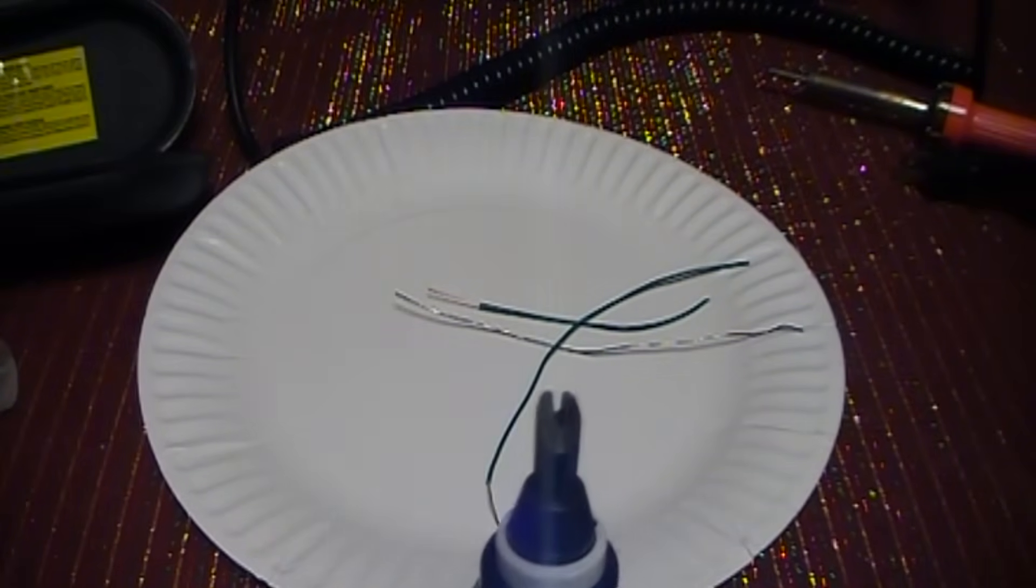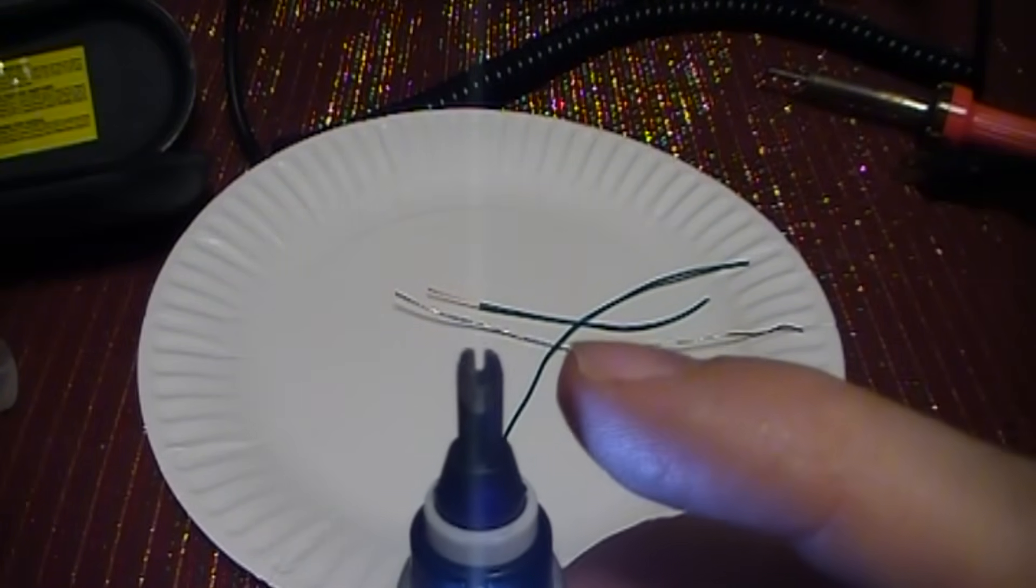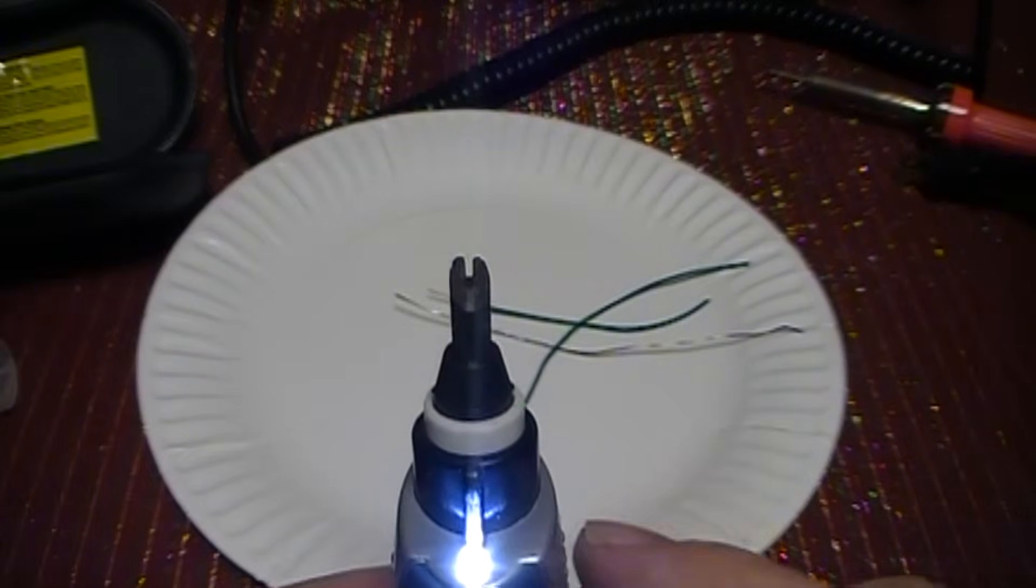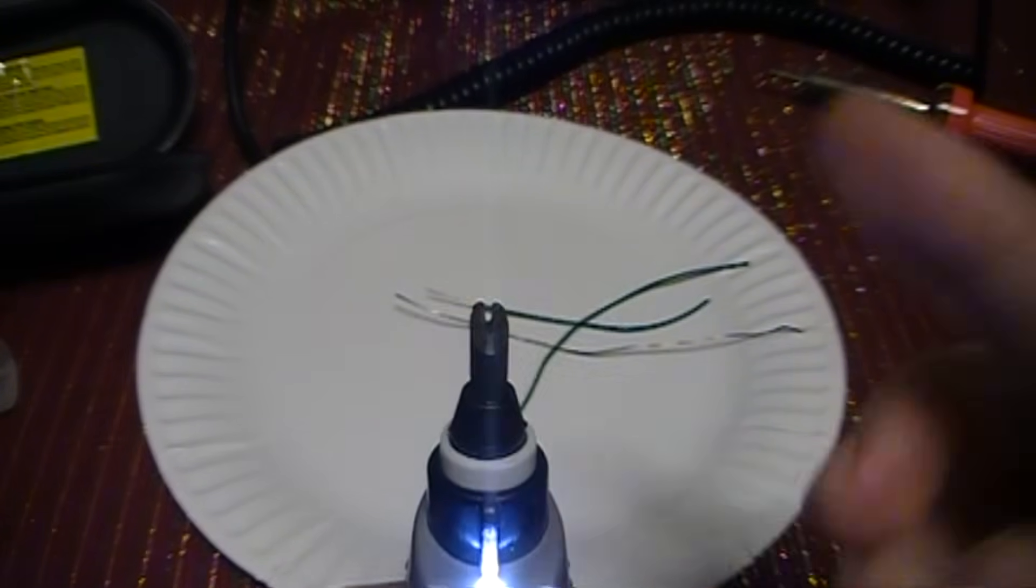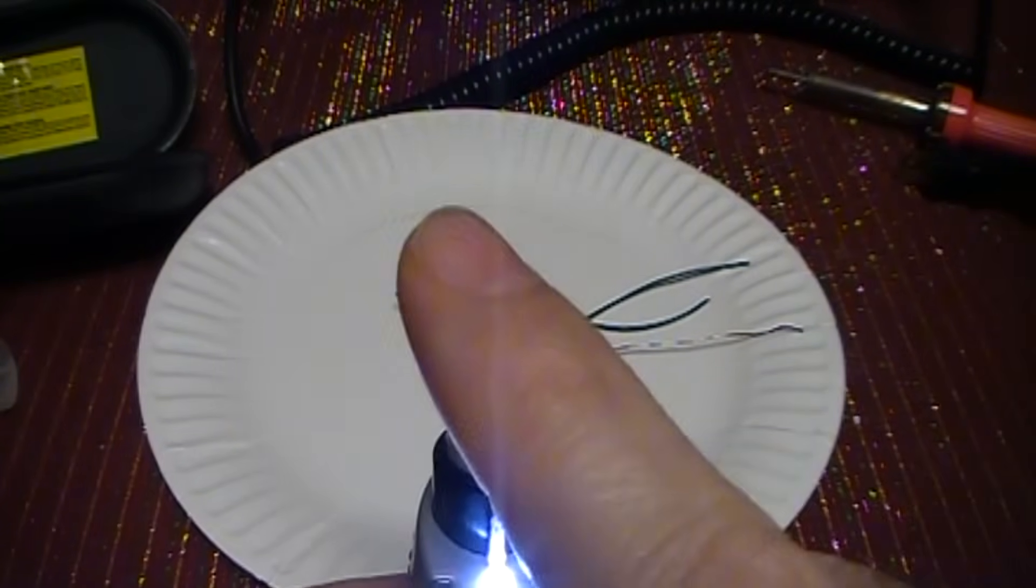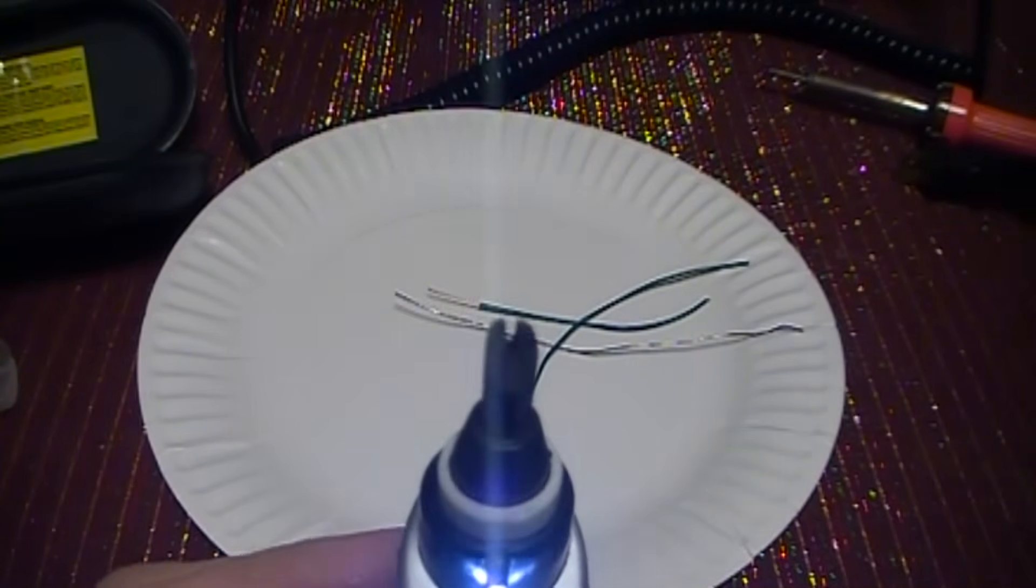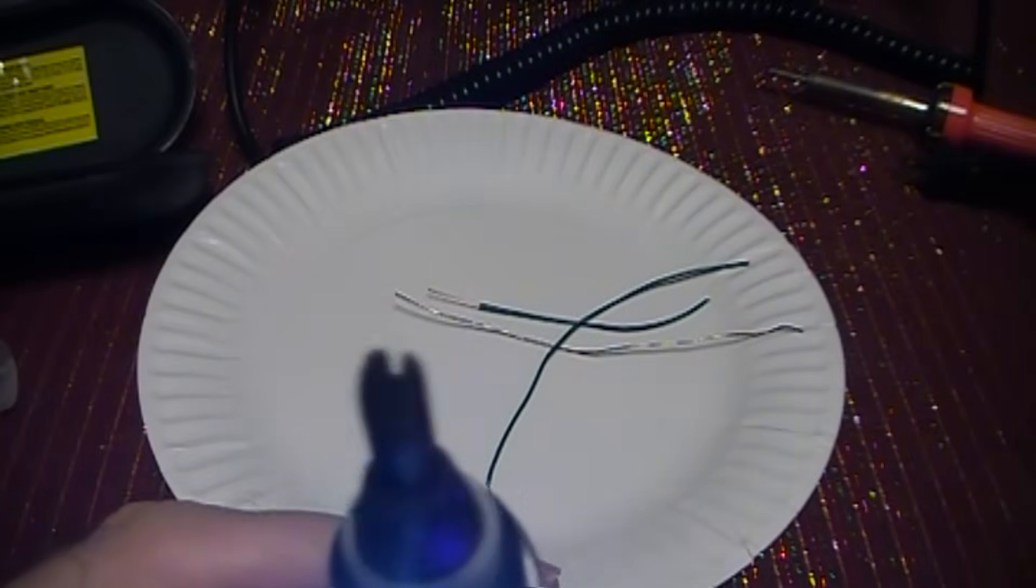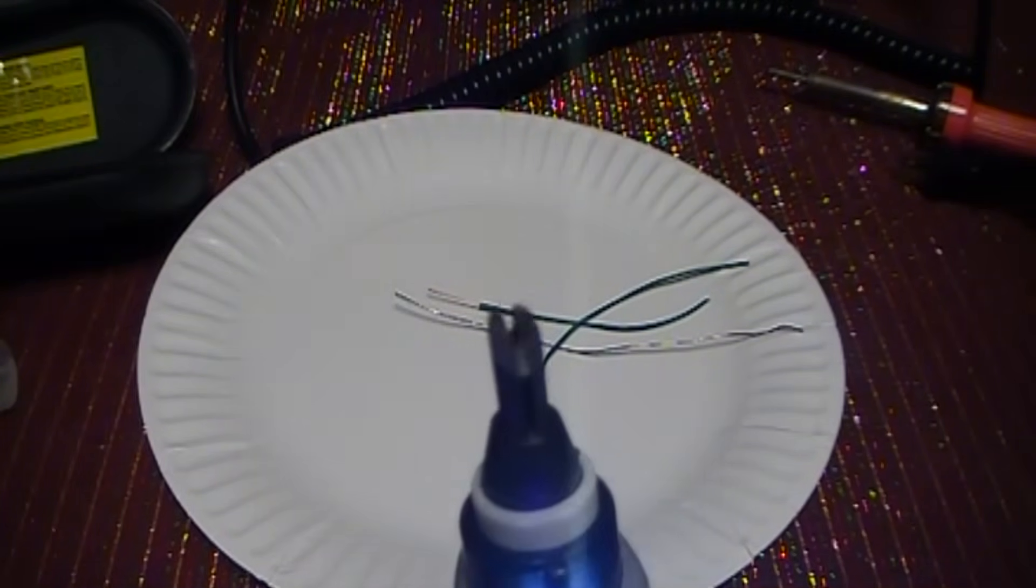And as you can see, it has two electrodes. Now, it's on. Watch this. Oh, the pain, the agony. No, there's nothing there. There's no heat. That's what's cool about these soldering irons.